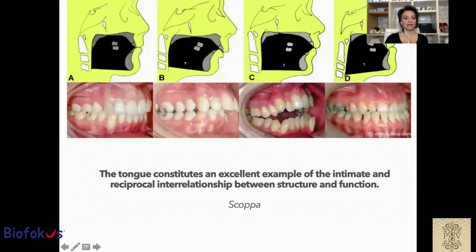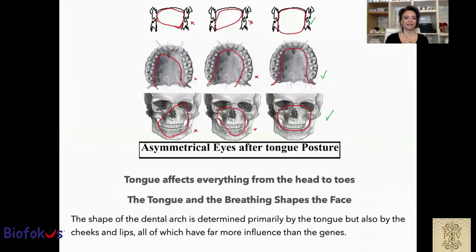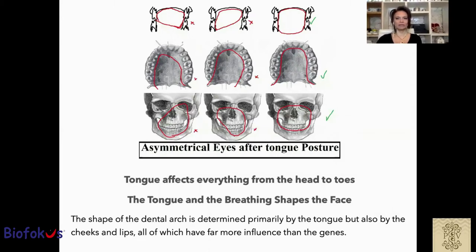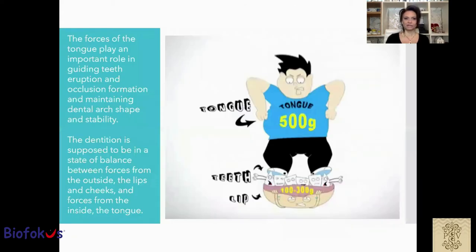The tongue constitutes an excellent example of the intimate and reciprocal interrelationship between structure and function. Tongue affects everything from the head to toe. The tongue and breathing shape the face. The shape of the dental arch is determined primarily by the tongue, but also by the cheek and lips, all of which have far more influence than the genes. The forces of the tongue play an important role in guiding teeth, eruption and occlusion formation, and maintaining dental arch shape and stability.